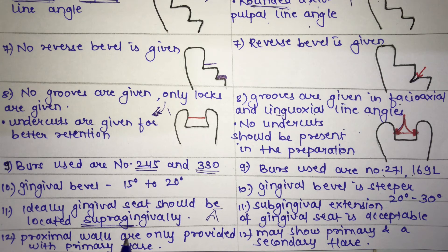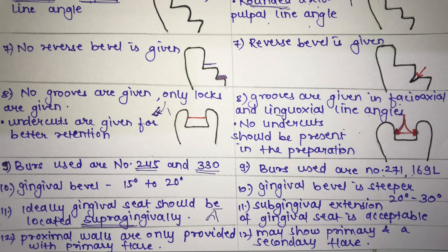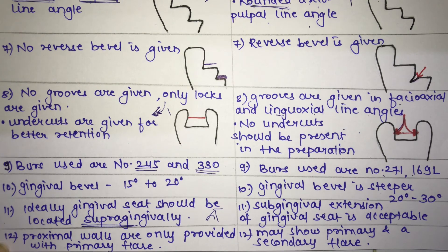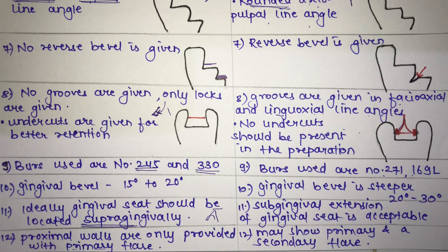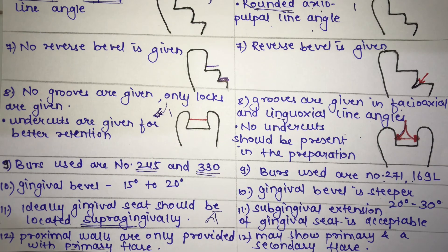The last difference is that in amalgam, the proximal walls are provided with primary flare only, whereas in cast restoration both primary and secondary flaring can be given. This topic of flare will be covered in a separate video. Remember: amalgam uses only primary flare, while cast restoration can use primary or secondary flare.